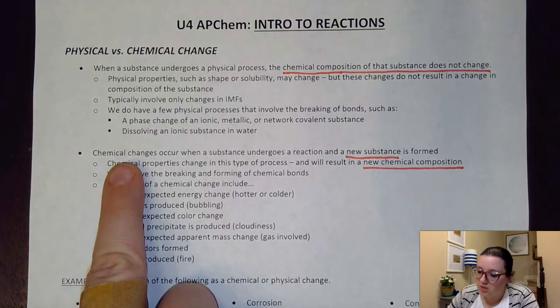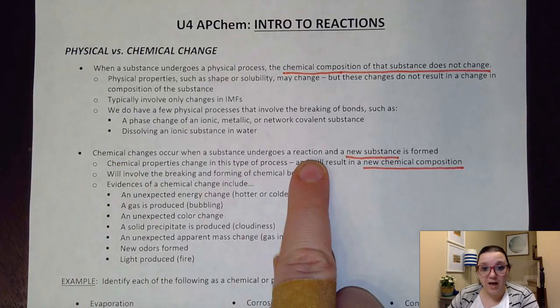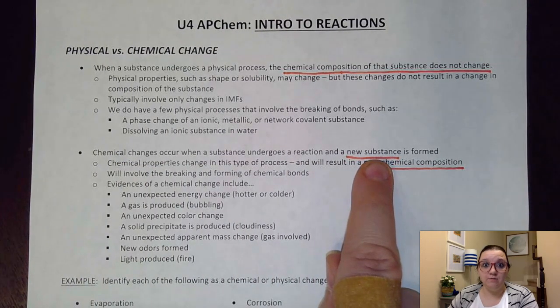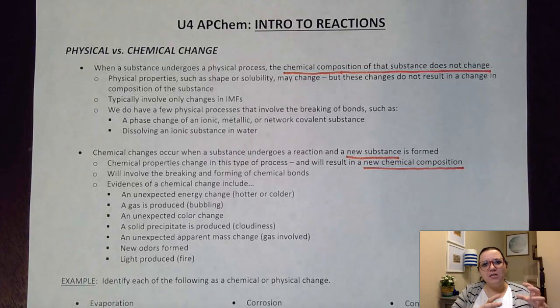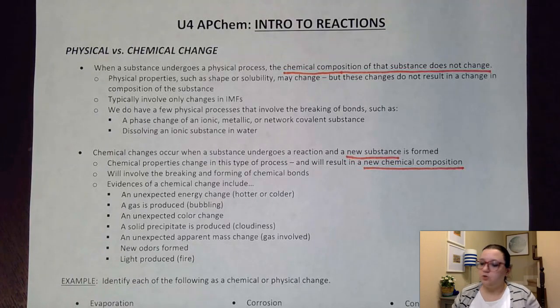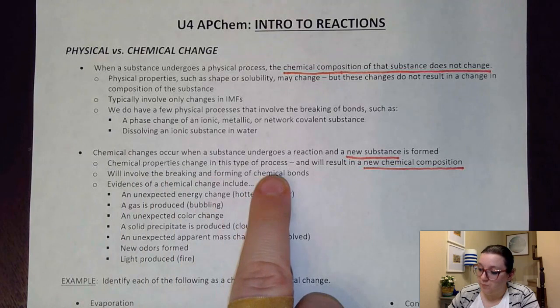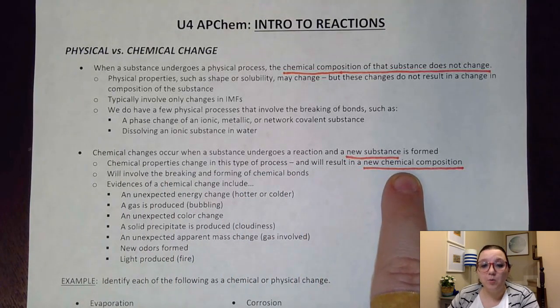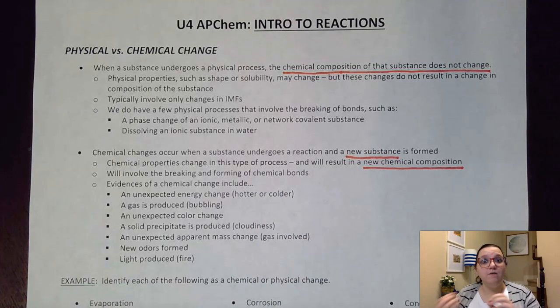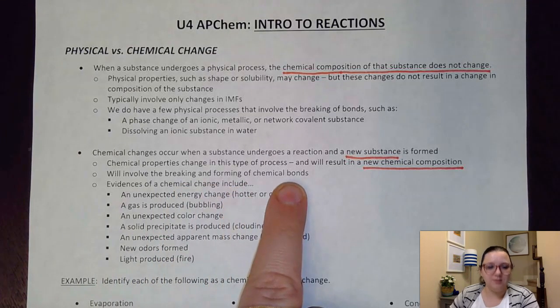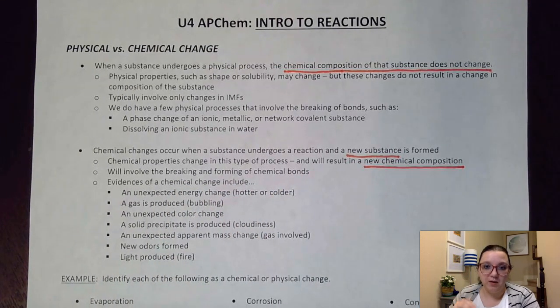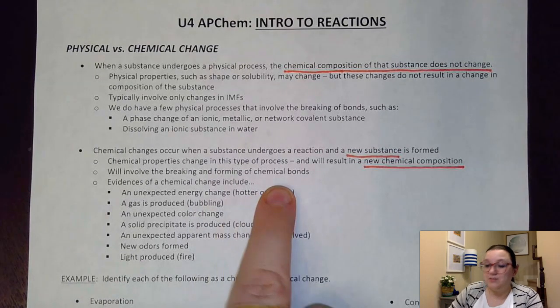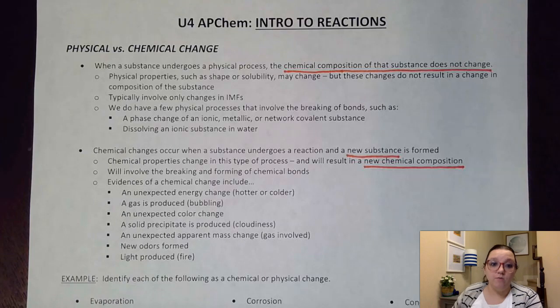So now on the flip side, chemical changes occur when a substance undergoes some sort of reaction and I get a new substance that's being formed. So here what would happen is that I would change the formula that I would write for that substance, which is very different than what I would do with the physical change. It says here, chemical properties change in this type of process and will result in a new chemical composition. So I won't have the same ratio of elements in my substances anymore. I'm going to change those ratios. I'm going to change those formulas up. These do involve the breaking and forming of chemical bonds. So all chemical changes you would be breaking bonds, but there are some times where you can break bonds and it be physical. So that's kind of a little bit of an overlap there.